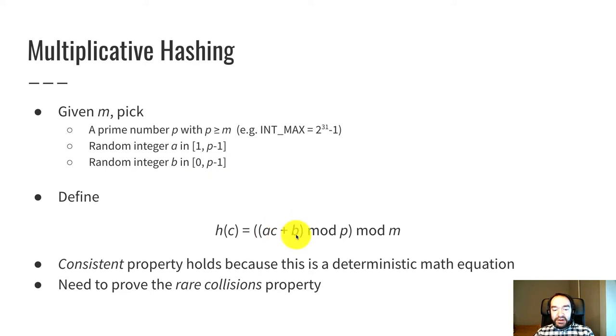So ac plus b, that's the core. This generates a pretty big number. a is a random number 1 through p. And if p is like 2 billion something, then a is somewhere between 1 and 2 billion. So it's a pretty big number. And c is often also a large number.